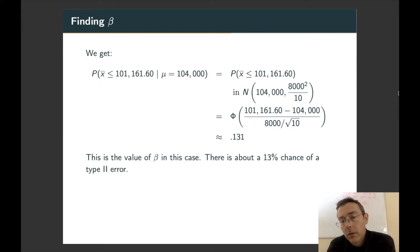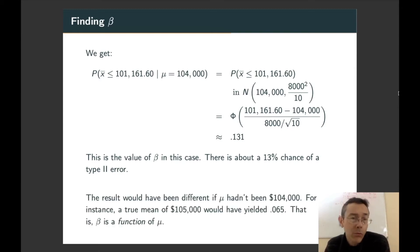We assumed here that the actual population mean was $104,000. Now, that's something we probably don't generally know. Moreover, if the value had been different, we would have gotten a different probability here.